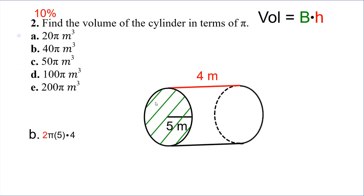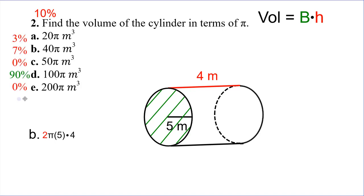Number two: find the volume of the cylinder in terms of pi. Only ten percent of you guys missed this so you did really well. Obviously our base is going to be the circle. So we want to find the area of the base which is five squared. Five squared would be twenty-five pi; twenty-five pi times four is one hundred pi. So the answer would be D.